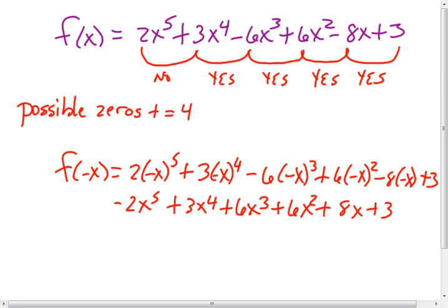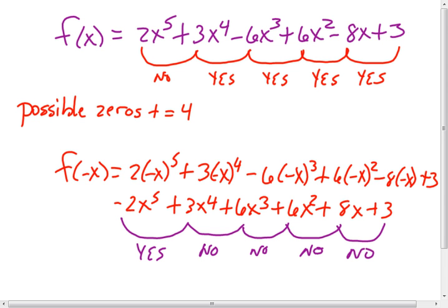So now we're looking for the possible sign changes. Starting with the first coefficient, negative 2 to 3. That would be a yes. Goes from negative to positive. Then the rest of these are all positive to positive. So in this case, it would be no. All these would be no's. So how many possible zeros do we have that are negative? The answer would be 1.